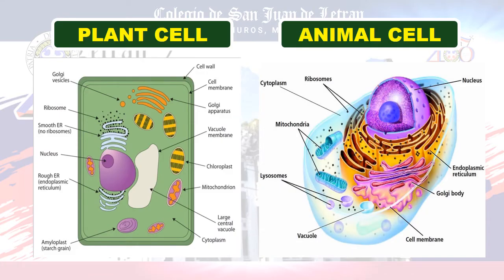Here, we'll be talking about plant cell and animal cell — organelles present in plant cell, organelles present only in animal cell, and also organelles present in both plant cell and animal cell.